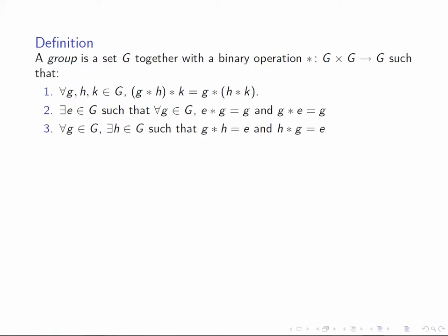Finally, the third condition is that every element has an inverse. In other words, for any element of the group g, there exists another element h in the group such that g star h is this identity element e and h star g is equal to e.